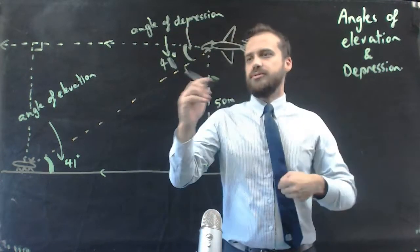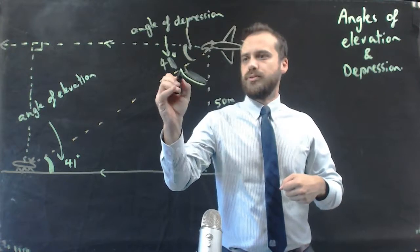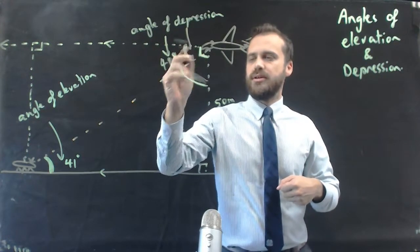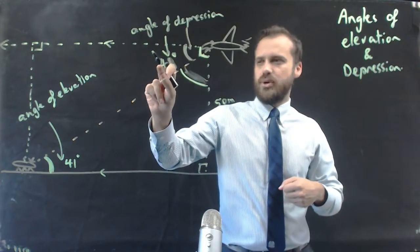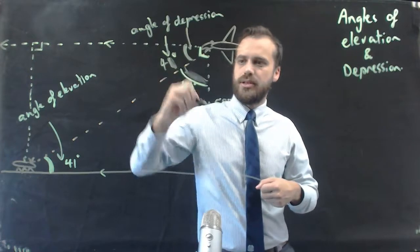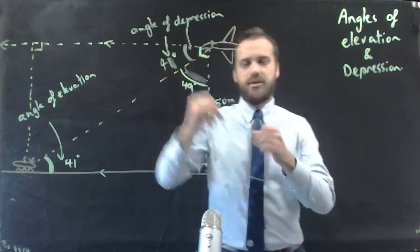You can still find this angle. You can find this angle because you know that that's 90 degrees. You know that that's 41. So, 90 minus 41 is 49 degrees. And that's how I made my mistake here.